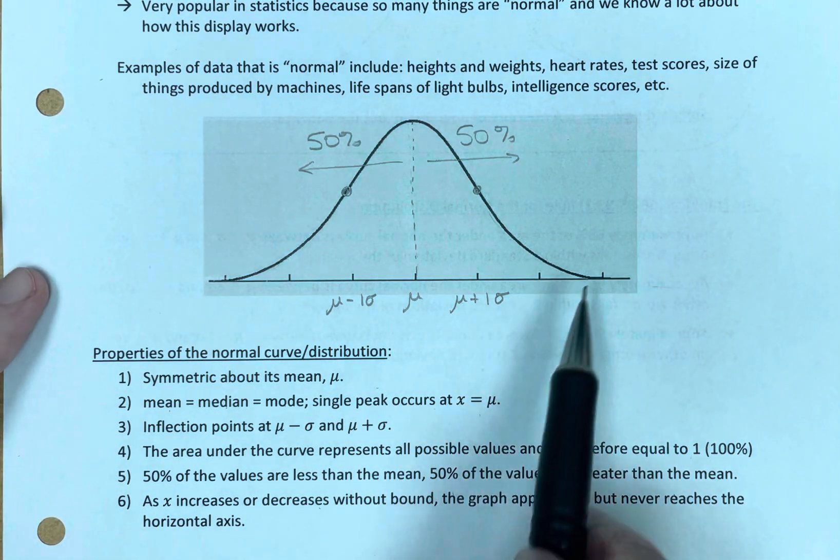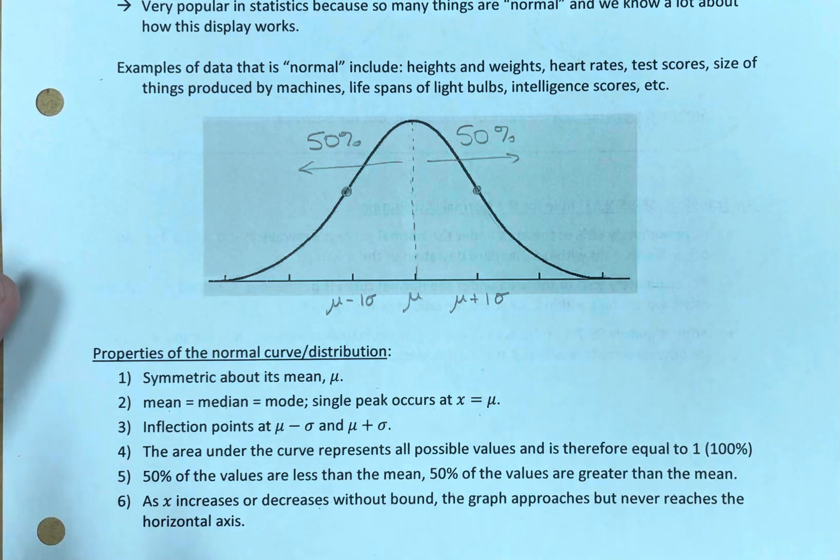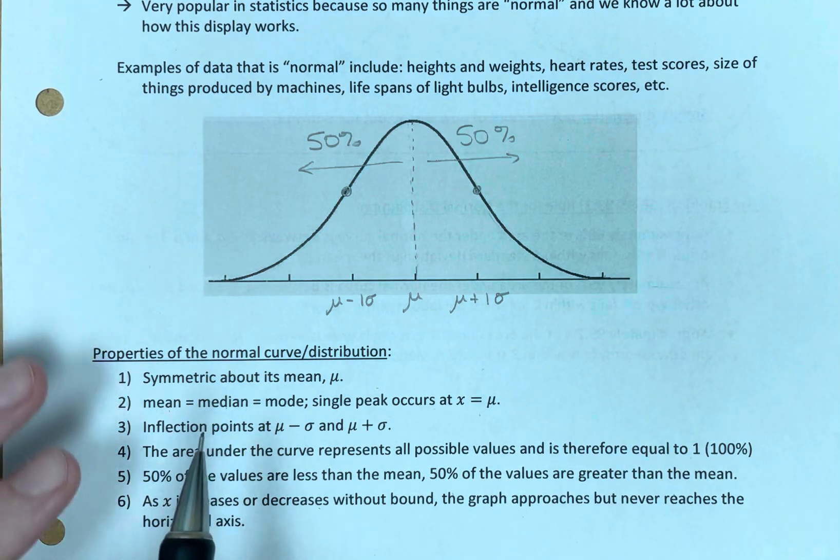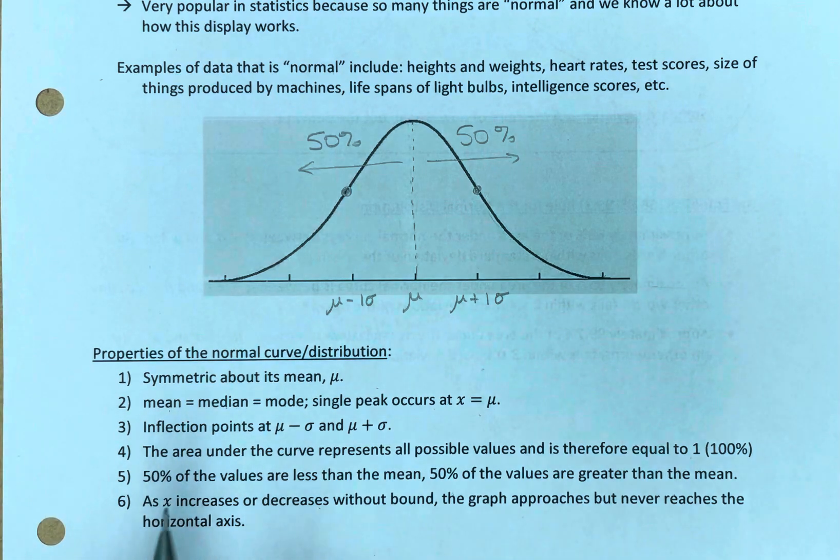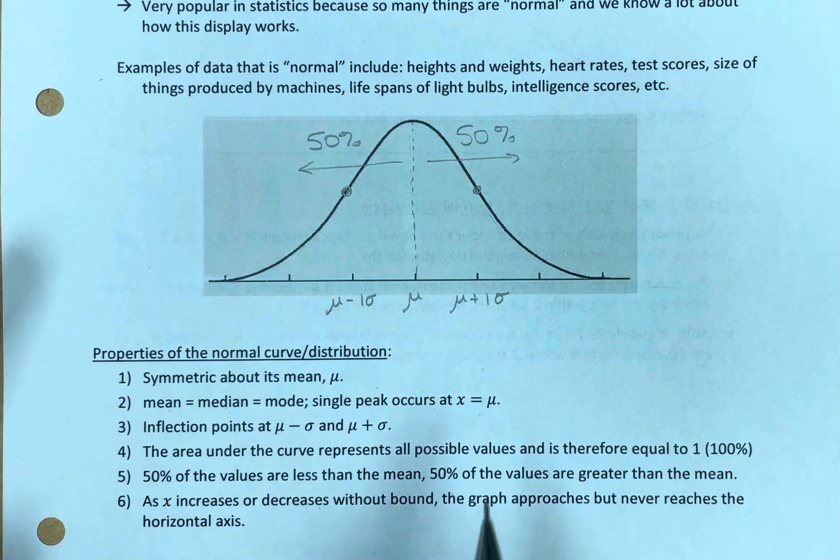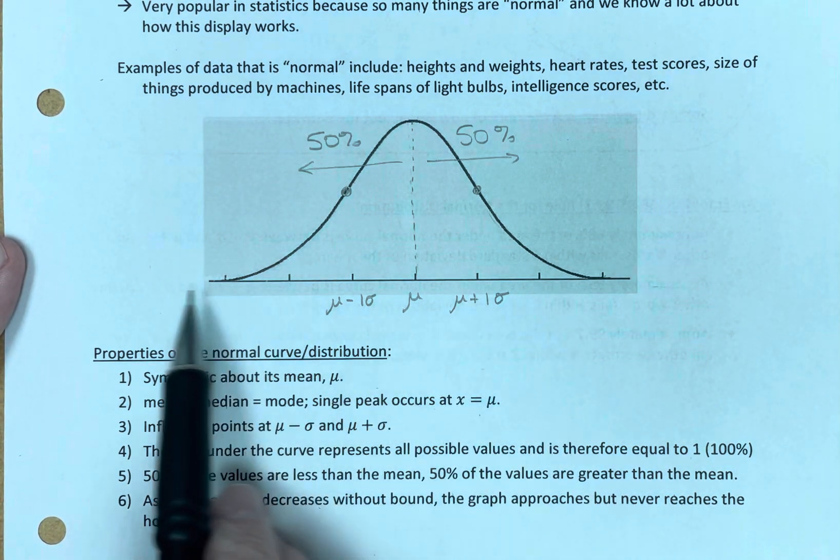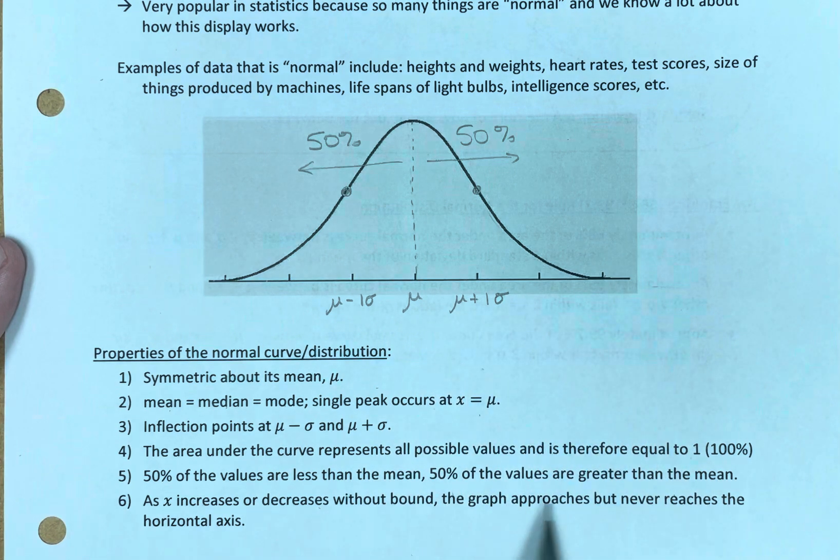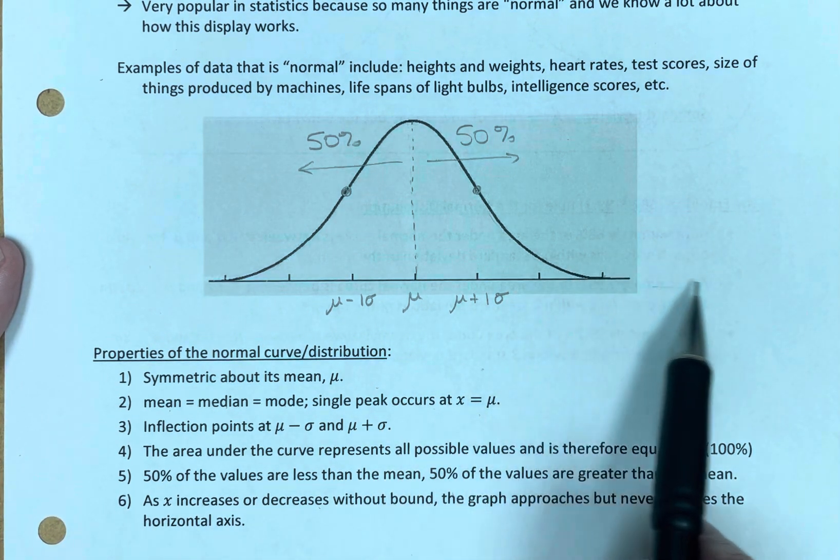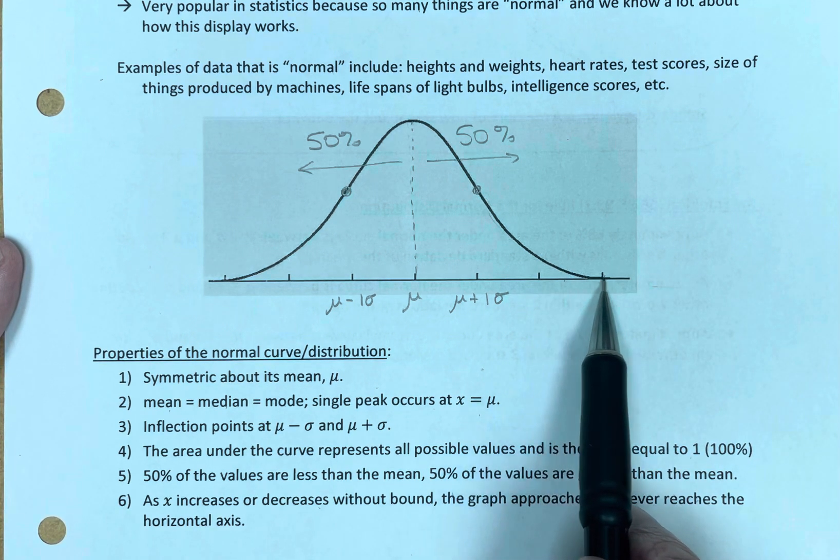And the last piece, even though it looks like this curve is touching the x-axis, it never does. It gets closer and closer and closer. The x-axis is actually called an asymptote, for those of you who remember some math terms. It gets closer and closer to this line, but the graph never reaches the horizontal axis. So, this goes on forever.